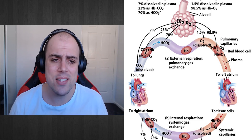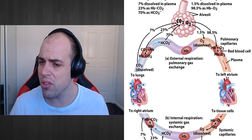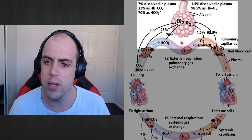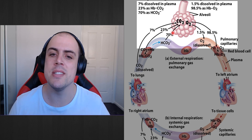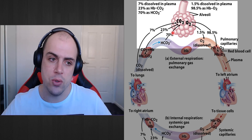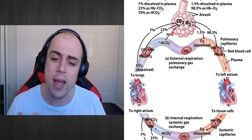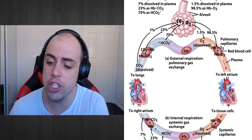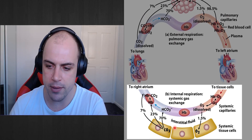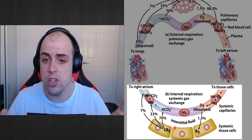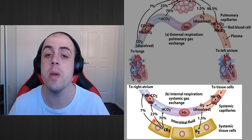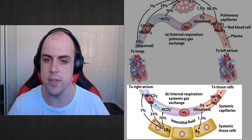Well, the answer is we kind of want both. When we are in the lungs, looking at the alveoli, we want hemoglobin to have a high binding affinity — we want it to scoop up all of those oxygen molecules as effectively as it can. Whereas when we get down into the tissues, we want hemoglobin to have a low binding affinity, so it doesn't hold on to those oxygen molecules, because we want that oxygen to be delivered.